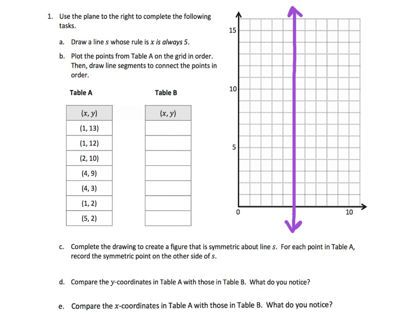Step B says to plot the points from table A on the grid in order, and then draw line segments to connect those points. So (1,13) goes right here, (1,12) goes right here, (2,10) goes right here, and (4,9) goes way over here.